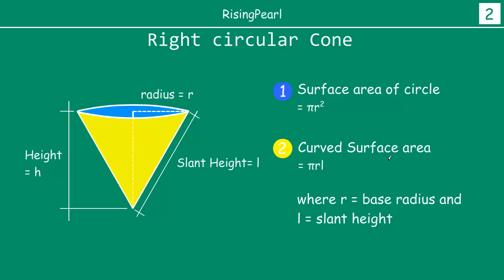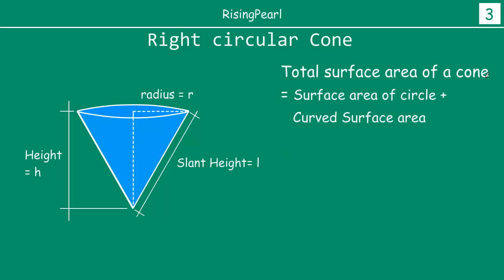The area of this curved surface is πrL, where r is the base radius and L is the slant height. So then total surface area is simply going to be equal to the surface area of the circle plus the curved surface area, which will be nothing but equal to πr², which is the surface area of the circle...